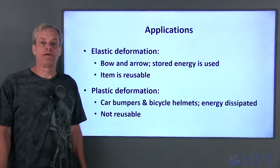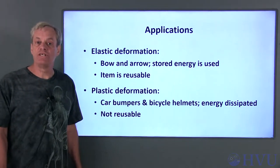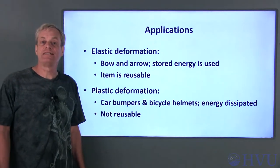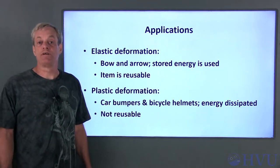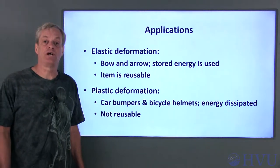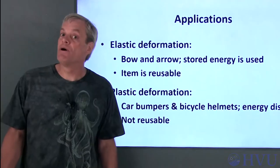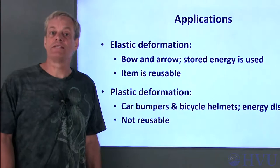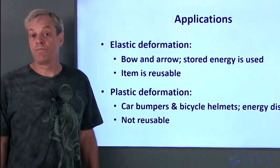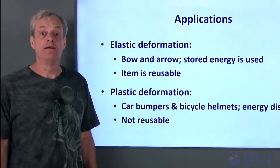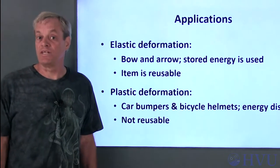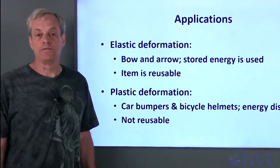Plastic deformation can be desirable in some cases, mostly where you need to dissipate a bunch of energy and don't need to reuse the material. One common place you'll find it is in safety devices. Car bumpers and bicycle helmets, for example, are designed to crush on impact. However, after they've been crushed once, they've outlived their usefulness. That's why you're supposed to replace your helmet if you have an accident — the material has likely undergone plastic deformation, even if it looks undamaged.